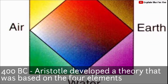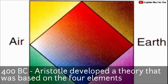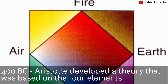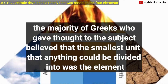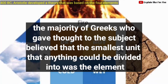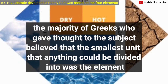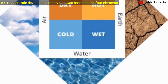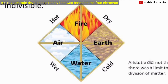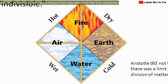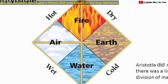Still in the same timeline, in 400 BC, Aristotle developed a theory based on the four elements. The majority of Greeks believed that the smallest unit anything could be divided into was the element. Aristotle named four elements: fire, air, earth, and water. He also believed there were four qualities to these elements: dryness, hotness, coldness, and moistness.